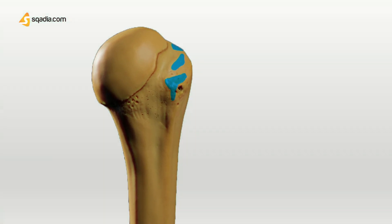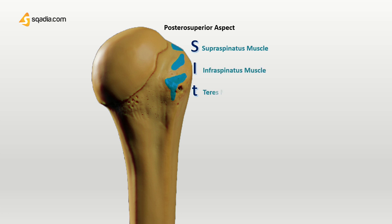If you remember the greater tubercle, there are three smooth and flat impressions present at the posterior superior aspect for muscle attachments. Going from superior to inferior, the muscles that attach at these impressions are the SIT muscles: supraspinatus, infraspinatus, and teres minor. The T is in a small letter because of the teres minor muscle, which will be very helpful to remember.